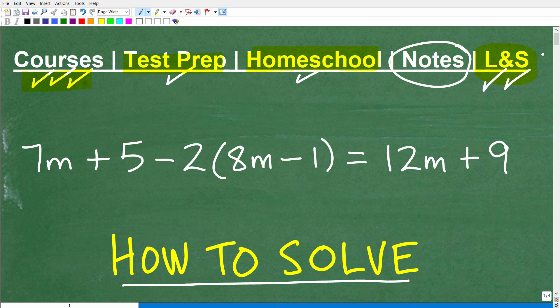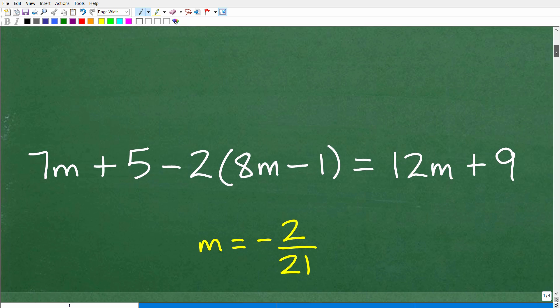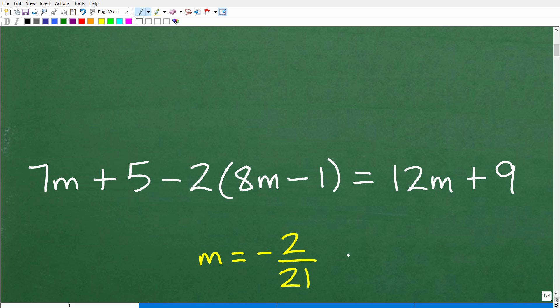Okay, so let's go ahead and solve this particular equation. And of course, the variable that we're solving for is m. So your answer is going to be m is equal to something. Well, what is that something? Well, I'm going to show it to you right now. That something, of course, is the solution. And m is equal to negative two over 21. That is the answer.